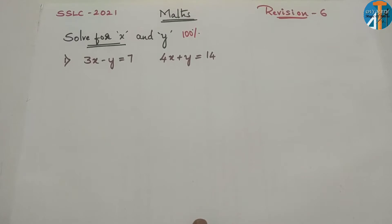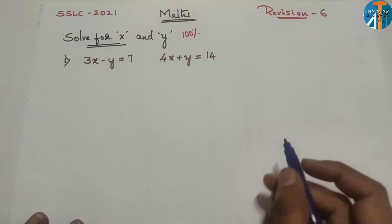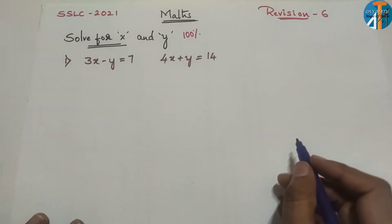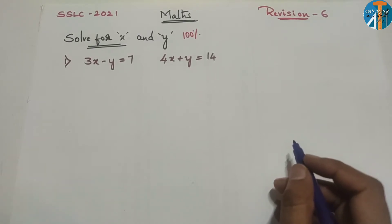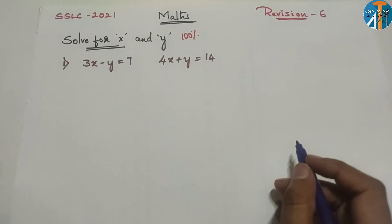Next lesson is Pair of Linear Equations. Here you have a 6-mark compulsory, 100% question. The question is: solve for x and y. This is the graphical method in the next class. In this class, the important question in this lesson — Pair of Linear Equations — is: solve for x and y. This question is very important.